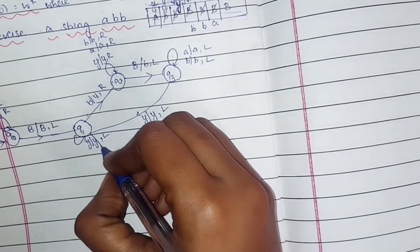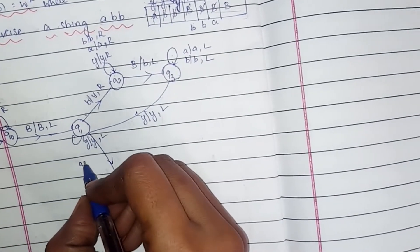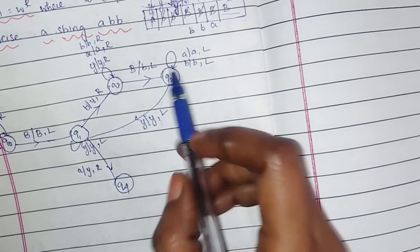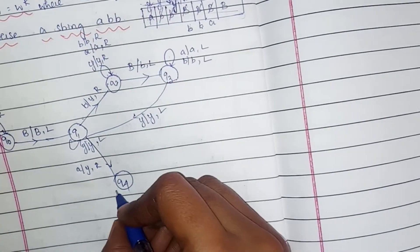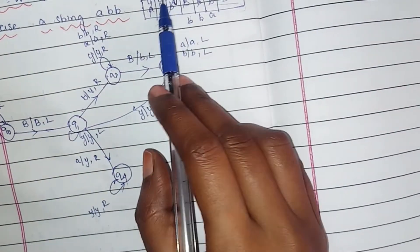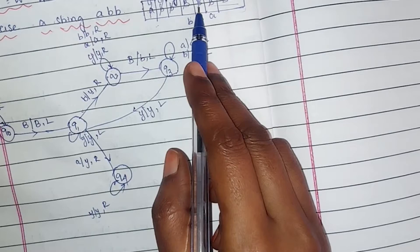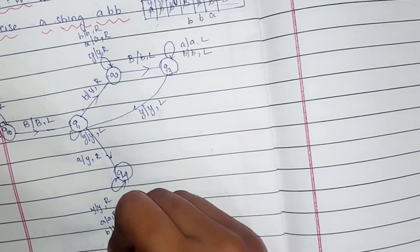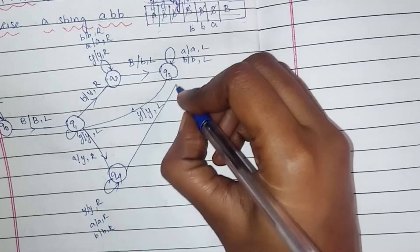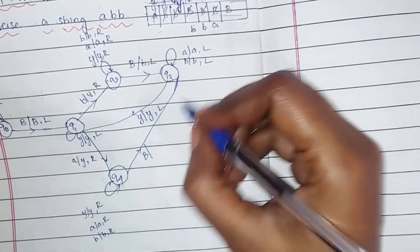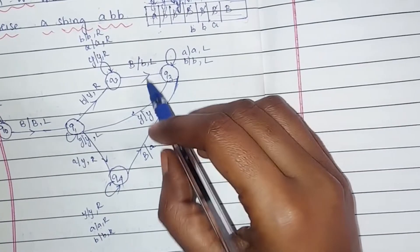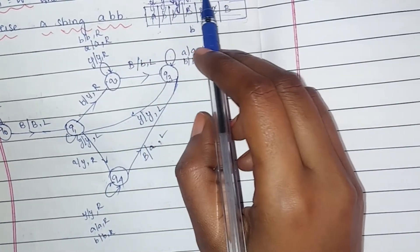When you see 'a', you replace it with 'y' and go right — this state is q4. You cross all 'y's moving right, then cross 'a' or 'b' symbols, and finally reach the blank symbol. When you see the blank, you replace it with 'a' and move leftwards.